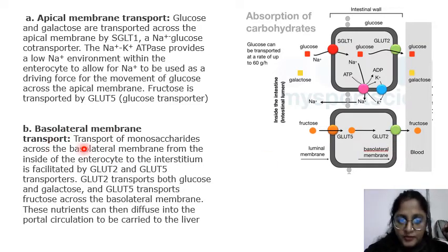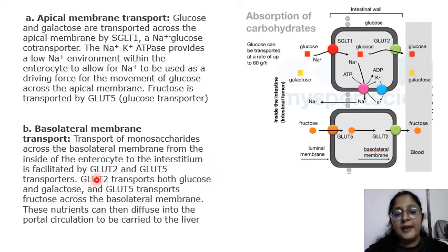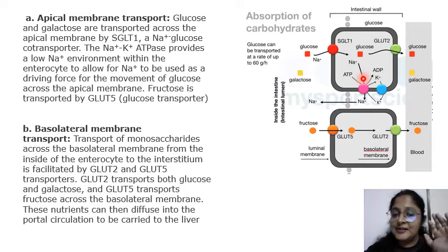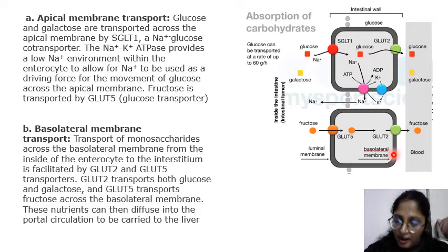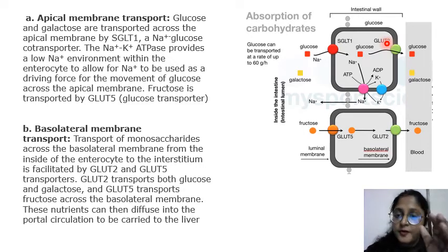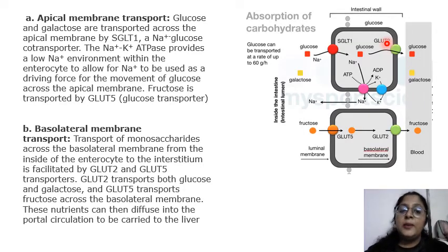For basolateral membrane transport, from inside the enterocyte to the interstitium, two transporters are involved: GLUT2 and GLUT5. GLUT2 transports both glucose and galactose, since they have a similar structure that allows them to be transported in a similar pattern. GLUT5 transports fructose across the basolateral membrane, after which fructose diffuses into the portal circulation, moving to the liver. So all these carbohydrates are absorbed by GLUT2 and GLUT5, with glucose and galactose also assisted by the sodium-dependent glucose transporter.